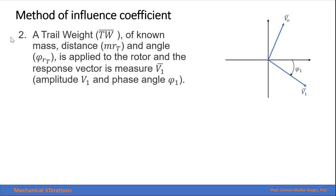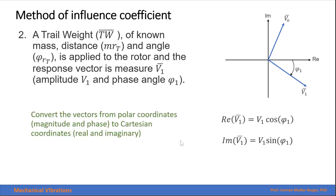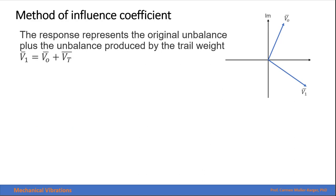For a second step, a trial weight of known mass, distance, and angle is applied to the rotor and the response is measured. Again, magnitude and phase angle. Graphically, we can represent that as another vector with magnitude and direction. Again, we convert the polar coordinates in terms of Cartesian coordinates. This response represents the original unbalance plus the unbalance produced by the trial weight that we applied to the rotor.